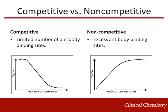Competitive immunoassays restrict the number of antigen binding sites, resulting in a competition for antibody binding between the endogenous analyte and a detectable labeled analog. As a result, the amount of labeled analog bound is inversely proportional to the amount of analyte in the sample. As the amount of analyte in the sample increases, the detectable signal decreases.